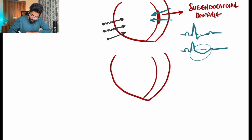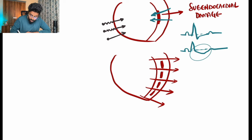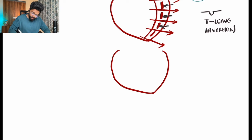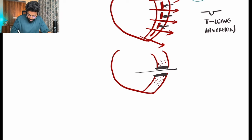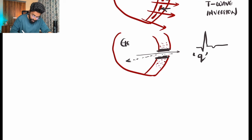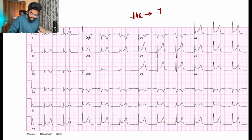T wave inversions occur because the damage is not transmural but intramyocardial — the depolarization current can go through, but repolarization waves stop at the damaged area, resulting in inverted or negative T waves. The pathological Q wave forms because of diffuse ischemia of the ventricle with one area of complete damage, creating an electrical window. The current reflects back through this electrical window, producing the pathological Q wave — a negative wave indicating localized complete necrosis.